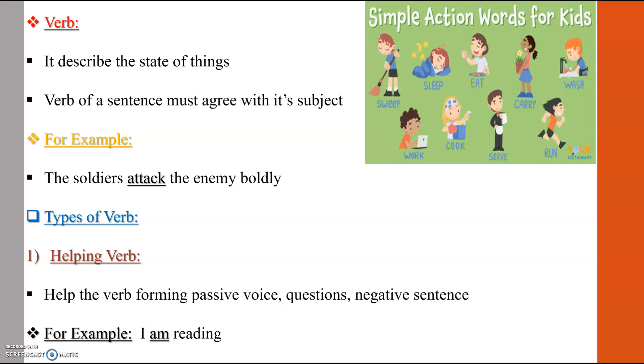There are further types of verb as well. The first one is helping verb. Helping verbs help the verb in forming passive voice, questions, or negative sentences. For example, I am reading. In this sentence, am is basically a helping verb because it helps to make a positive sentence.